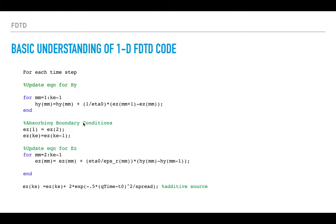We are observing boundary conditions, basically EZ of 1 — the left boundary — equals EZ of 2, and EZ of KE — the rightmost boundary — equals EZ of KE-1. The update equation for EZ is similar to HY but requires HY at that time step. EZ at KS is the additive source, where KS is the source point.